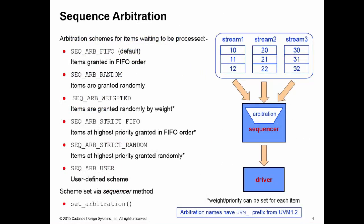In the previous training byte, we looked at the two simple arbitration mechanisms, FIFO and random. In this training byte, we're going to look at the three arbitration mechanisms that use weighting or priority to select the next data item: weighted, FIFO, and random.